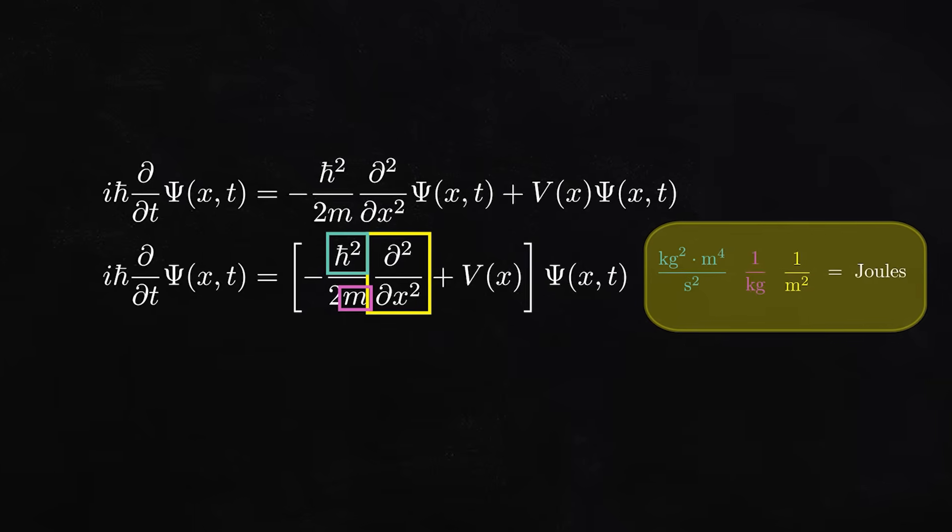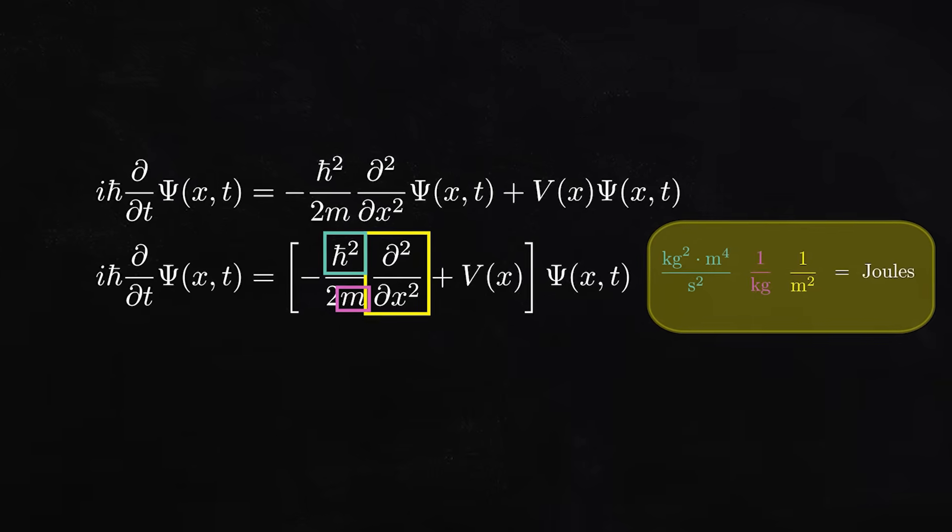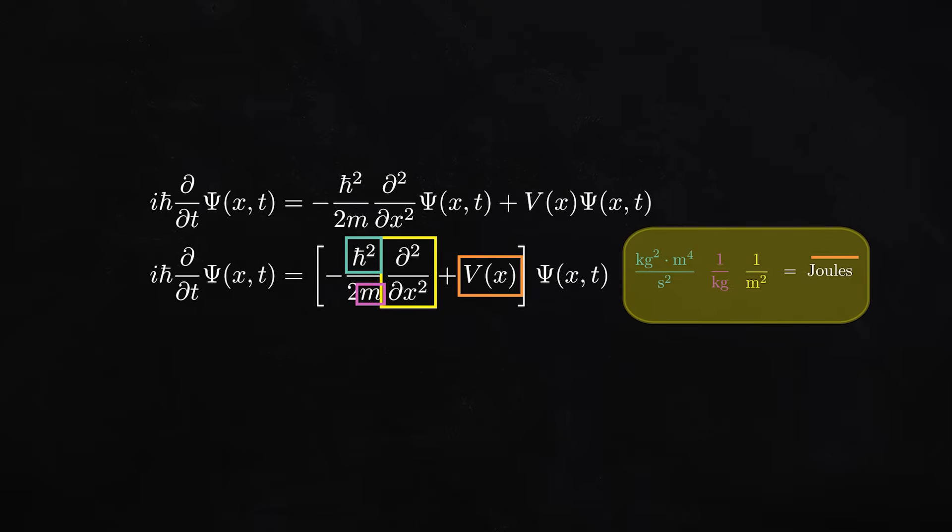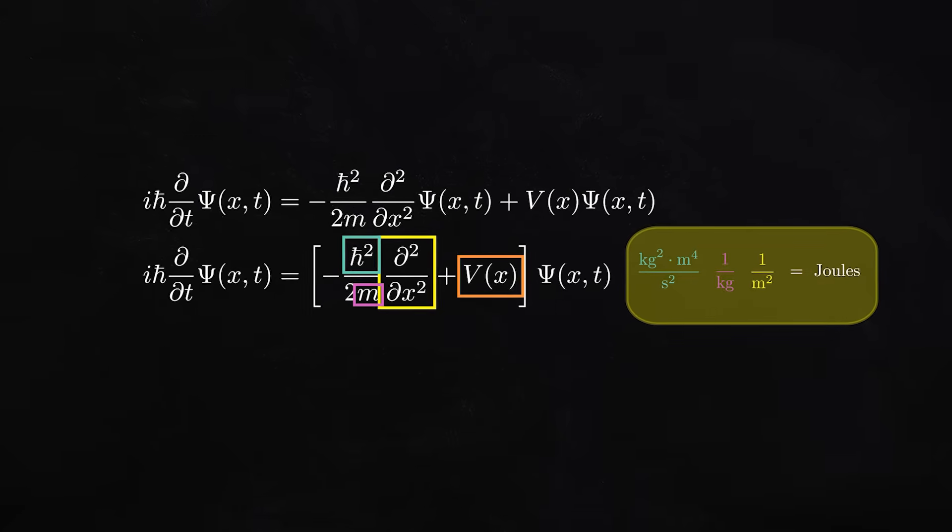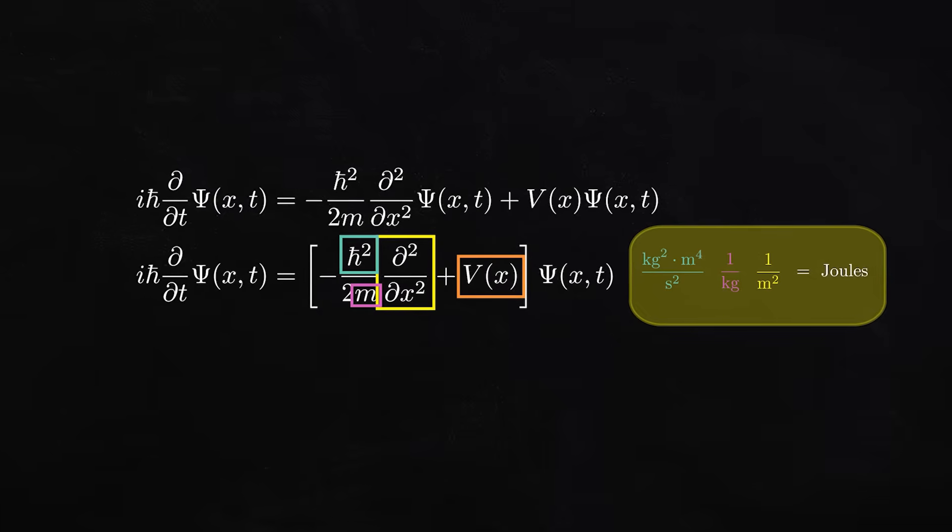It turns out, if we take all of the units and combine them together, the end result here is that this term has the units of energy. Now what about the next term? Well, that's this v of x. Well, that's actually really easy. That's just the potential energy in our system, whatever the system is that we're studying.